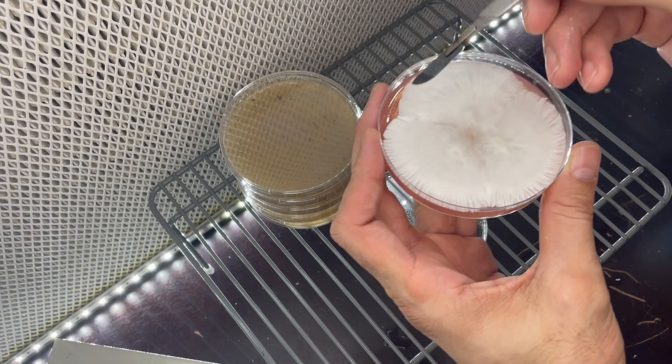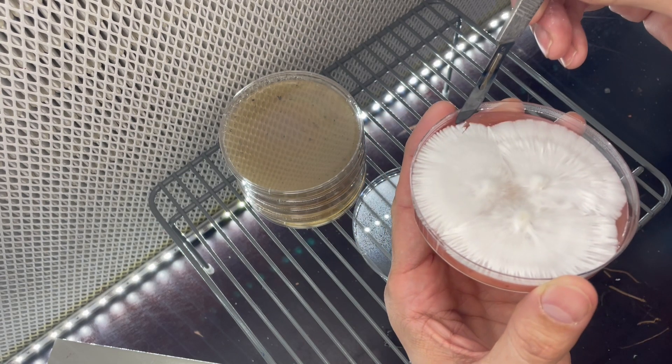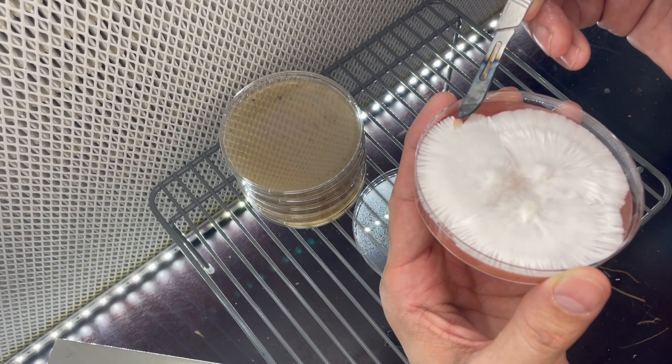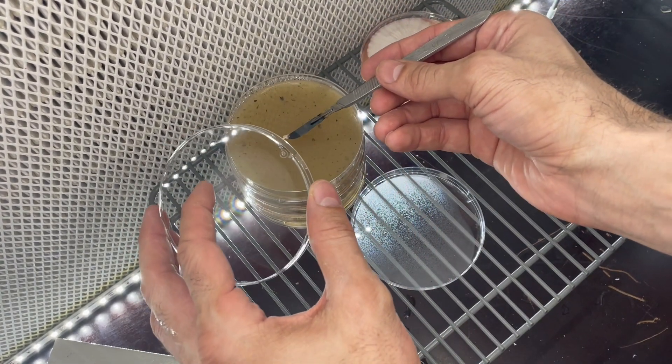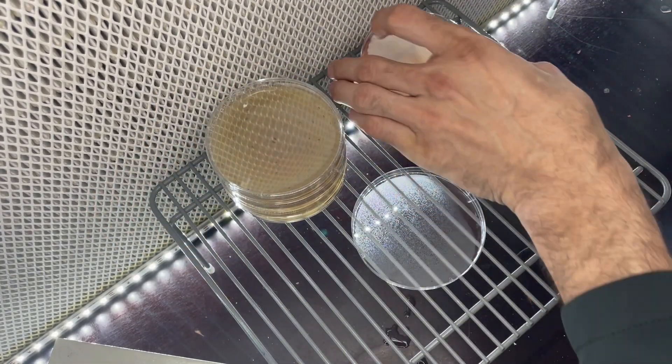Now when you're selecting growth, you want to go towards the outside, but not right on the outside rim. The reason being that's the closest chance for contamination if you're on the outside rim. So if you see I take just a little small piece, put it in.